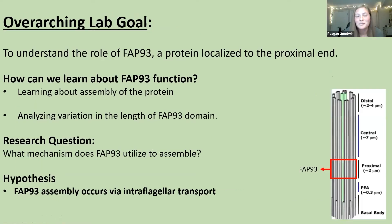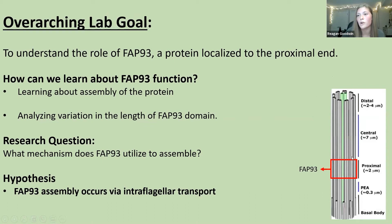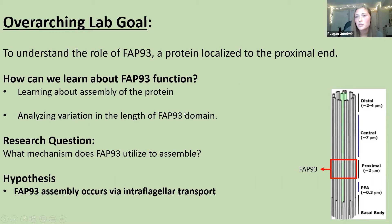Getting back to the project: the lab goal is to understand the role of FAP93. This protein is not distributed along the whole axoneme — it's located just at the base of the cilia, right where they start. We're curious about this protein's function. One approach, which I'll be discussing, is studying the assembly of this protein. My research question is: what mechanism does FAP93 utilize to assemble? I hypothesize that it uses the intraflagellar transport mechanism.